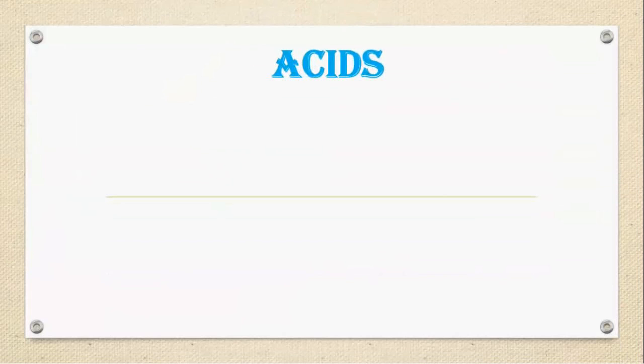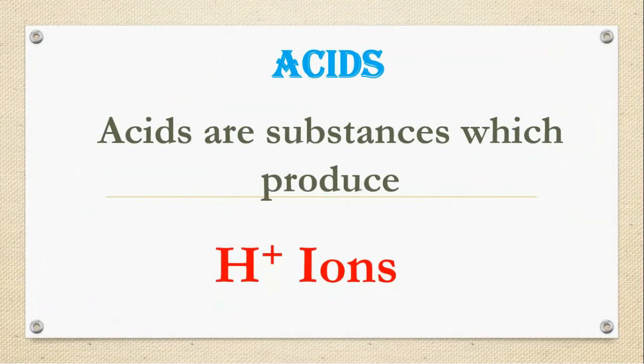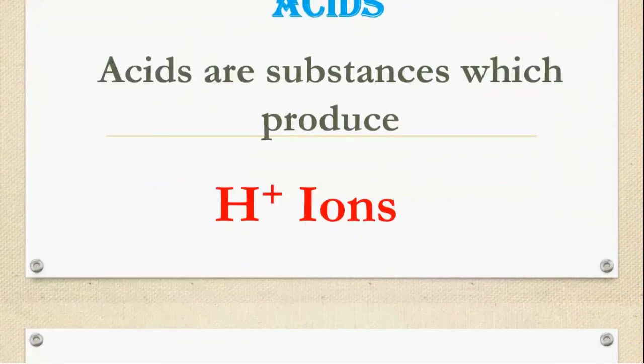First, we need to learn about acids. Let us see the definition for it. Acids are the substances which produce H plus ions. Try to remember the definition and H plus - H stands for Hydrogen.